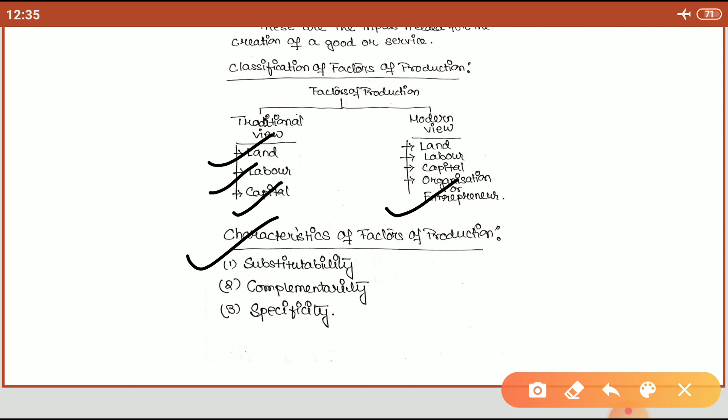What are the characteristics of factors of production? Here we discuss three important characteristics that all factors of production possess: substitutability, complementarity, and specificity.